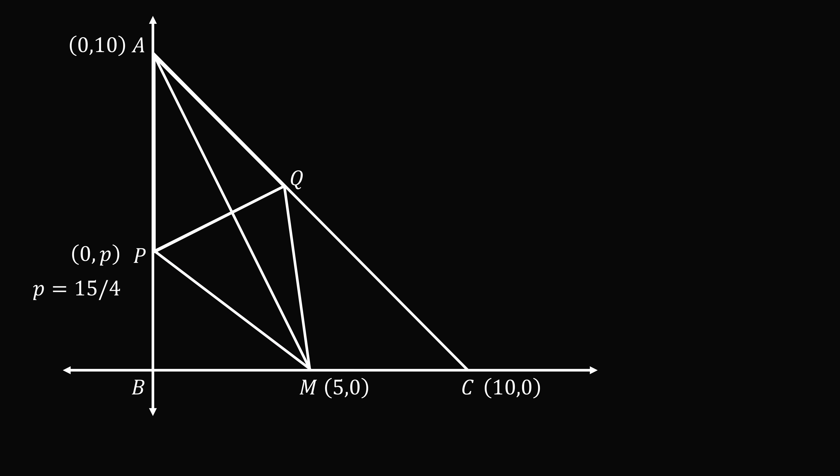Now, all we need to do is figure out the coordinates of point Q. This will be a little bit trickier. Now, since we folded about the crease PQ, we know that AQ is equal to QM. But we don't know the coordinates of Q. But we do know that Q is along the line AQC. So let's figure out the equation for the line AQC.